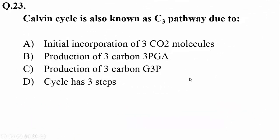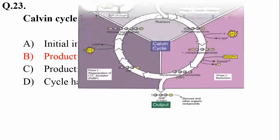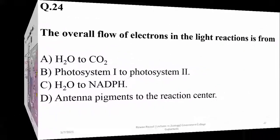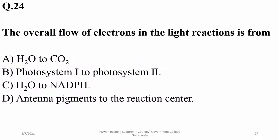The Calvin cycle is also known as the C3 pathway due to the production of a 3-carbon compound in the form of 3-phosphoglycerate, which is the first stable product of the Calvin cycle. The overall flow of electrons in the light reactions is from water to NADPH.